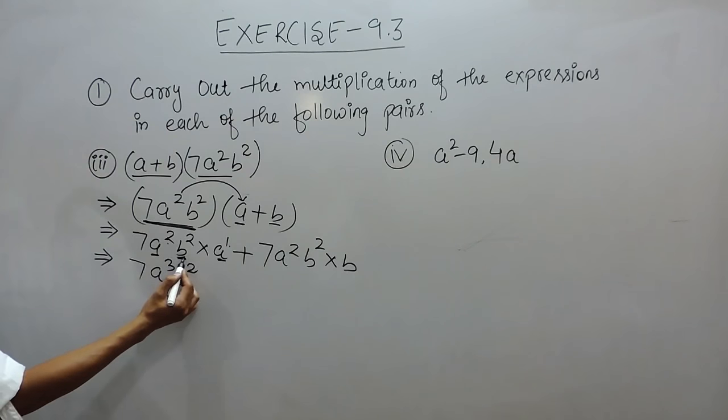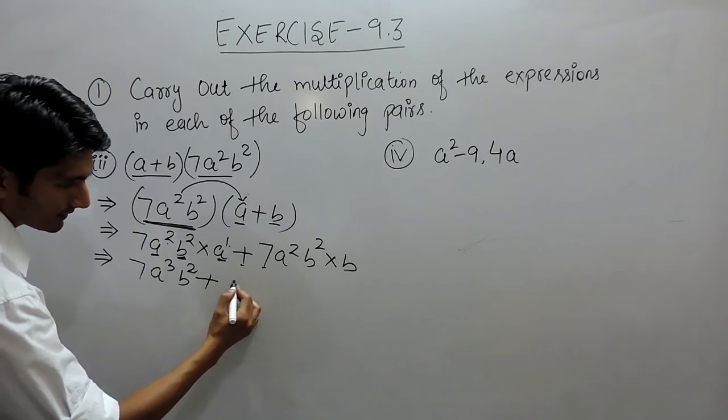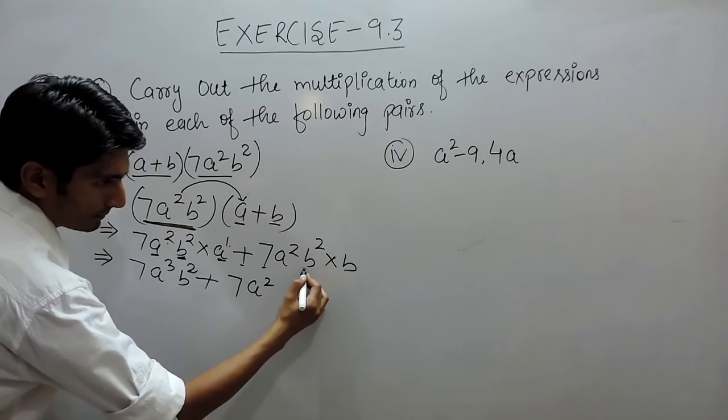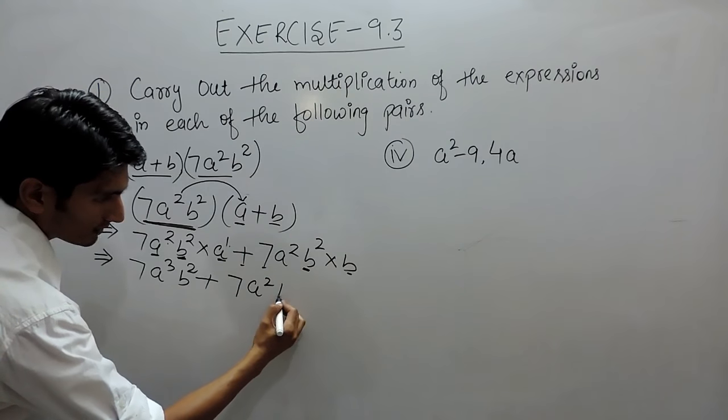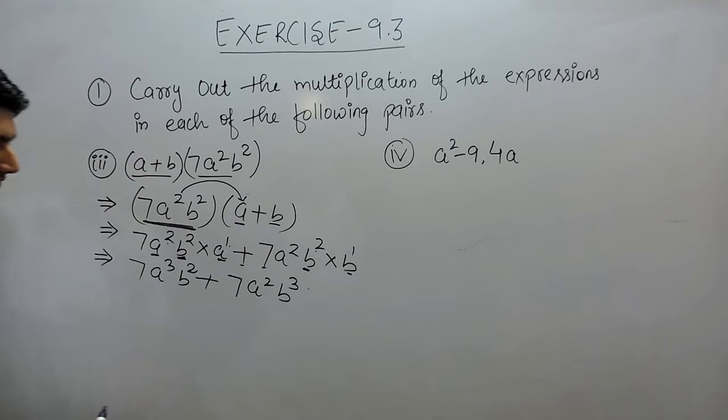Plus, and again this is constant, and when this b² is multiplied by b, this will become b³ because 2 plus 1 is 3.